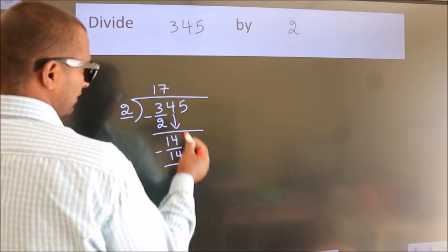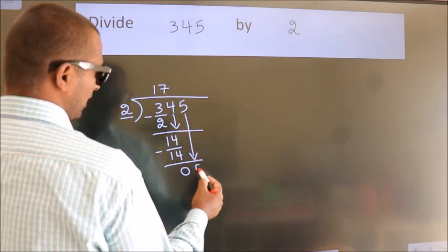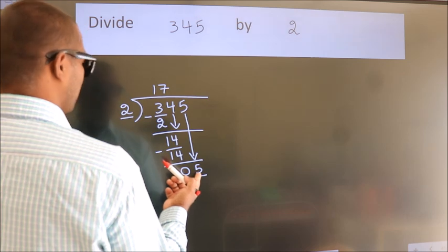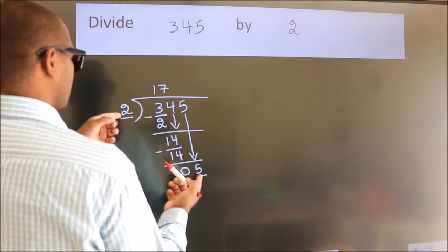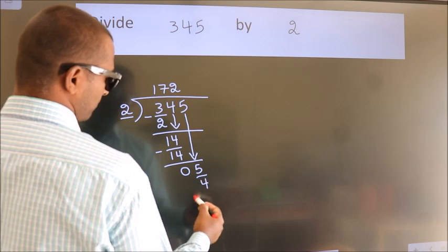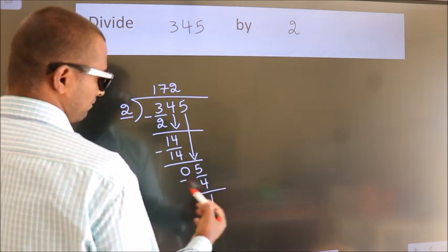After this, bring down the beside number. So 5 down. So 5. A number close to 5 in 2 table is 2 2s, 4. Now we subtract. We get 1.